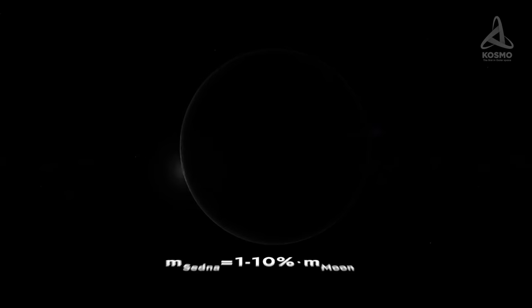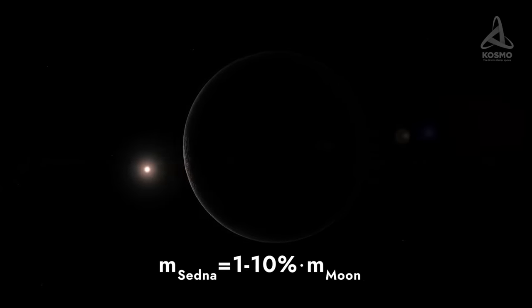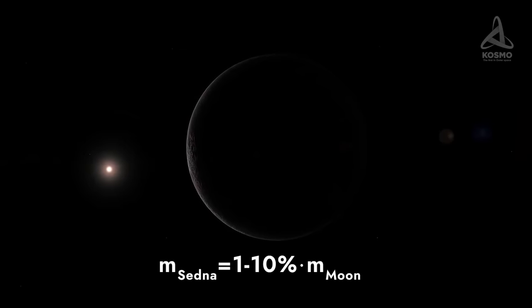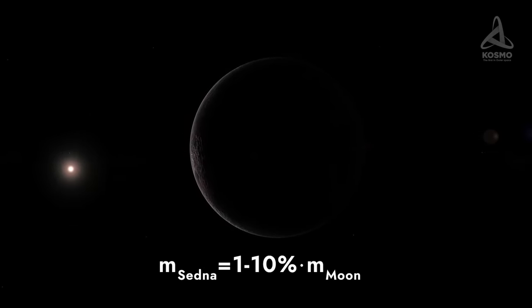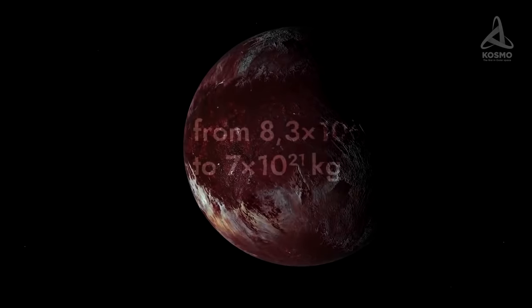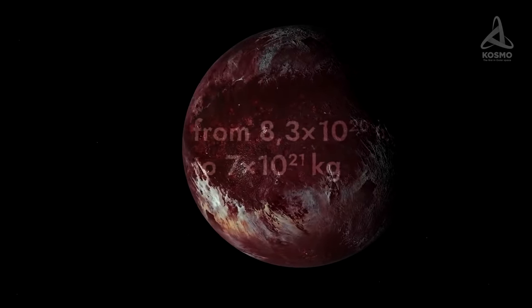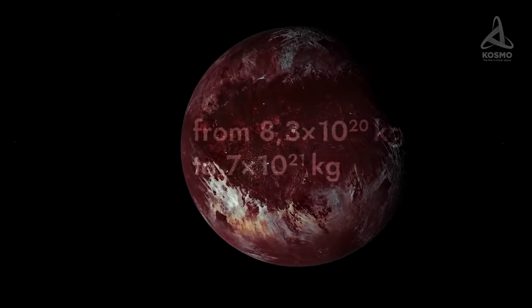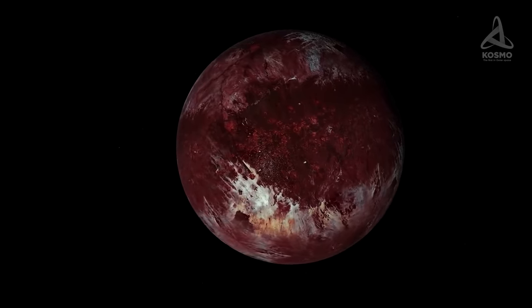Unfortunately, there are no moons around Sedna, that is why it is hardly possible to gauge its mass with a high degree of accuracy. As it is, it is estimated at 1 to 10% that of our Moon. In plain exact numbers, it could be anything from 8.3 times 10 to the power of 20 kilograms to 7 times 10 to the power of 21 kilograms. Only a special expedition to the dwarf planet's environs would yield much more precise data.